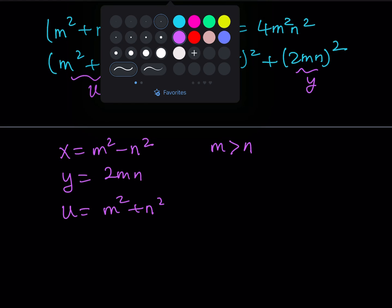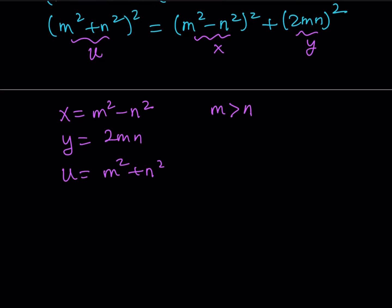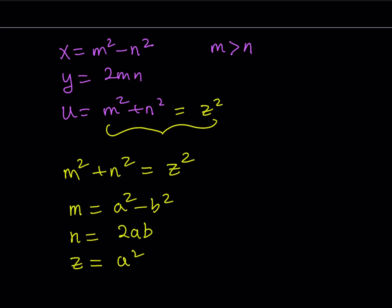If we replace u with z squared, we get another Pythagorean-type equation involving m and z. We can solve this with similar parameters — let's use a and b. Since this equation is satisfied for m and z as integers, there exist integers a and b with a greater than b such that: m equals a squared minus b squared, n equals 2ab, and z equals a squared plus b squared.